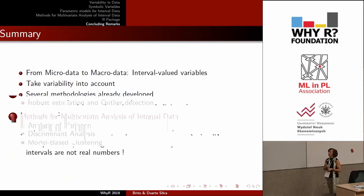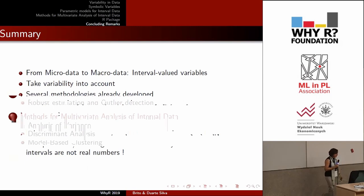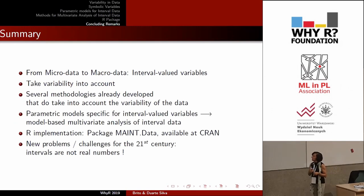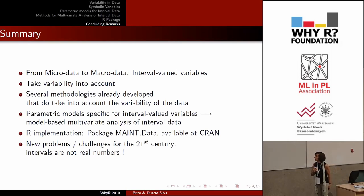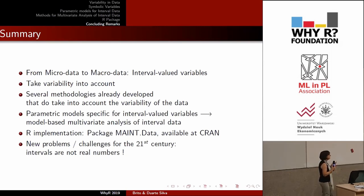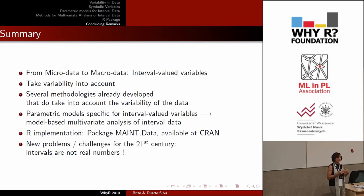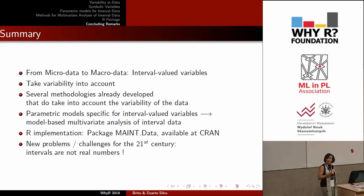To summarize: we have shown a way to go from micro data to macro data by representing data by intervals, allowing variability to be taken into account. Several methods have been developed. In particular, we have presented parametric models specific for interval-valued variables, which allow for model-based multivariate analysis of interval data. The implementation in R is available on CRAN. Interval data and other types of symbolic data keep raising new problems, because results and theorems for real-valued data cannot be taken for granted once data goes beyond the usual model — intervals and distributions are not real numbers. So it remains a wide field for future research. Thank you very much.